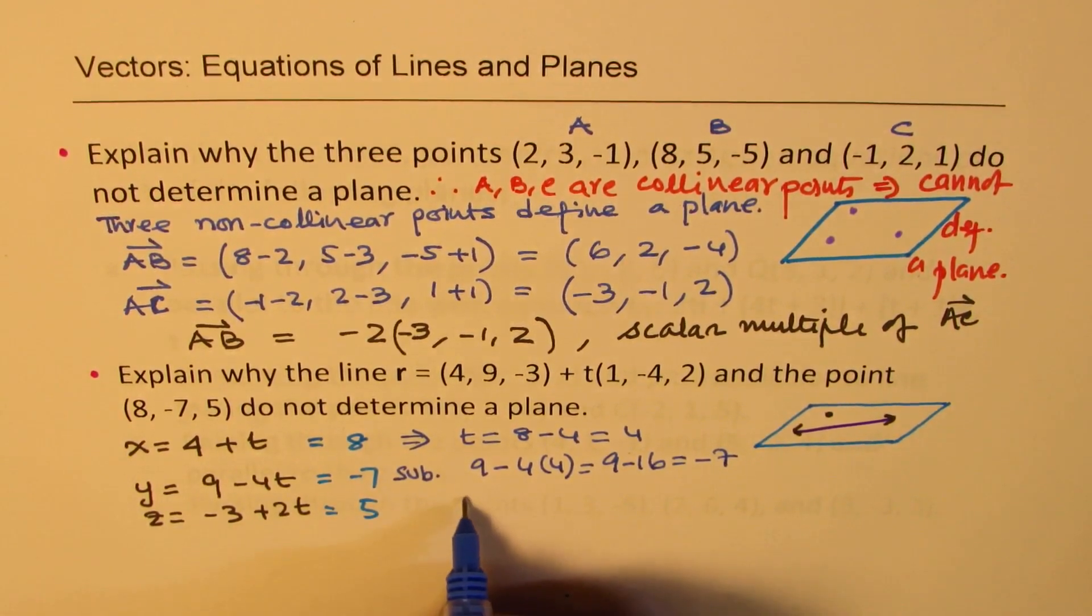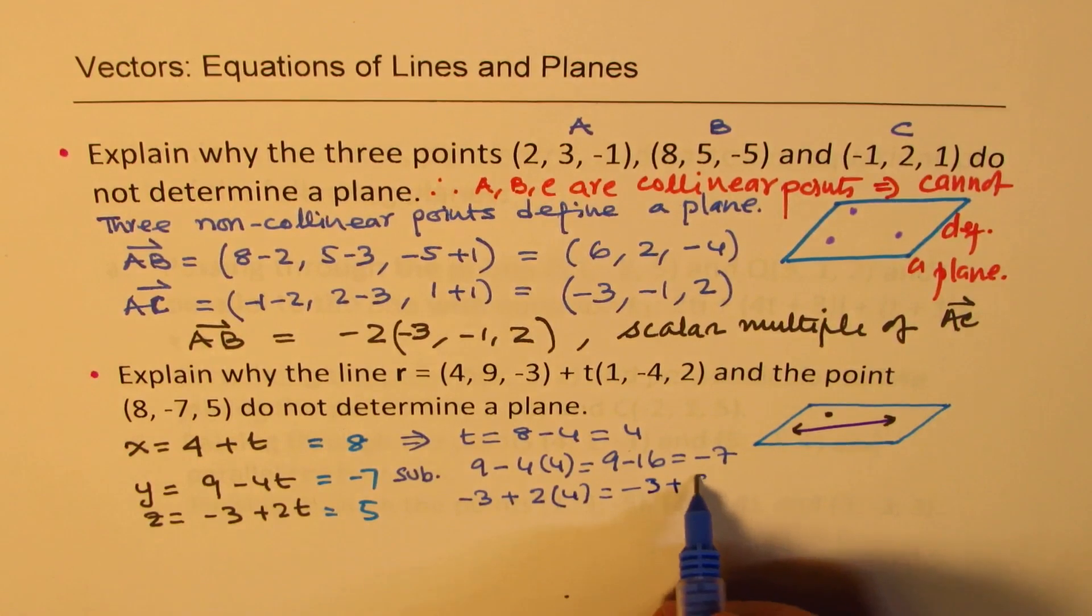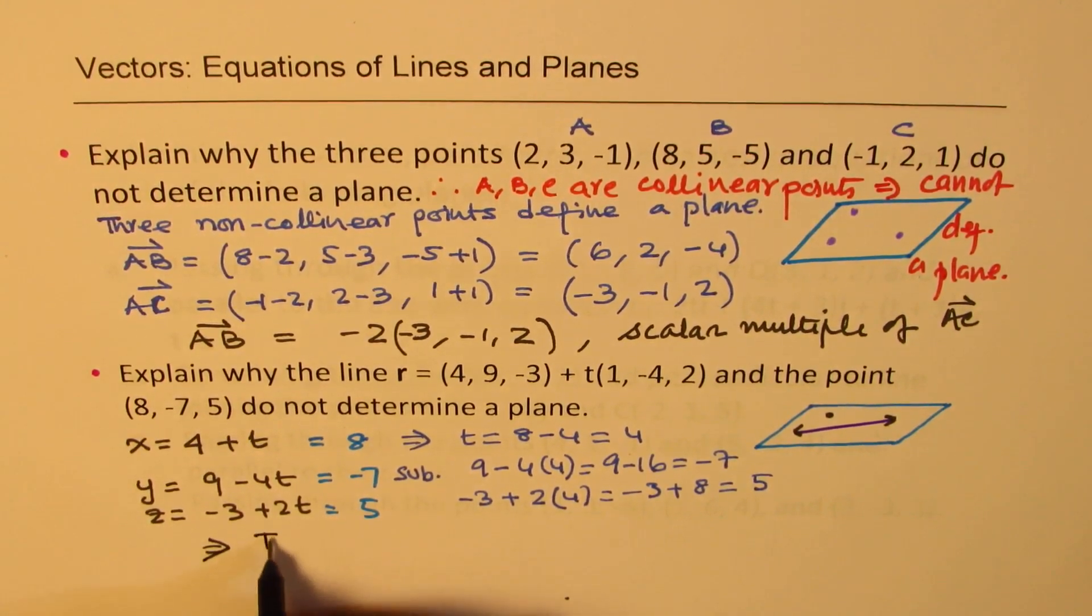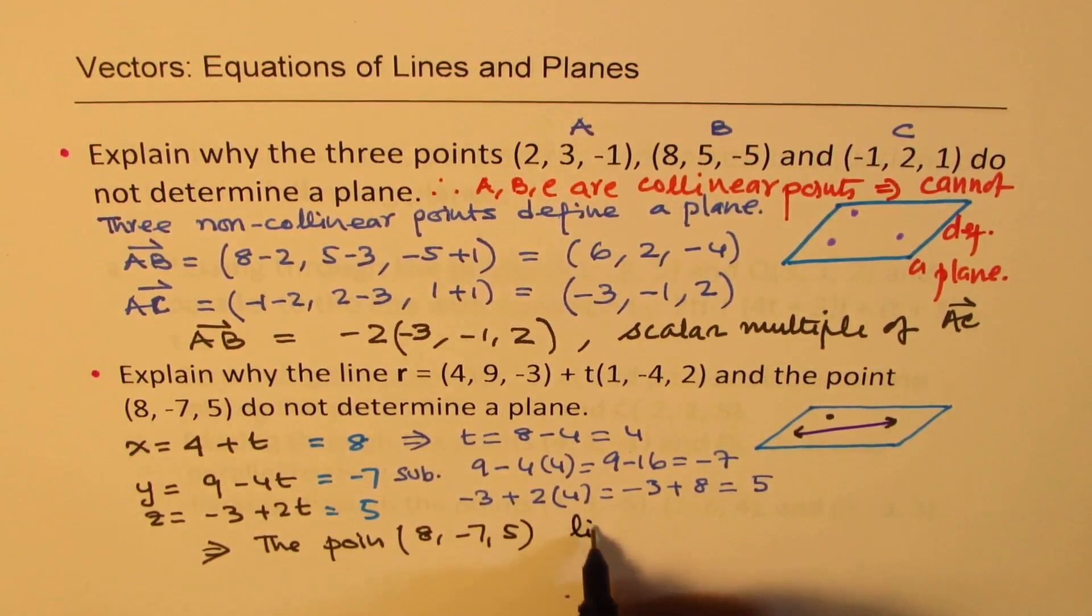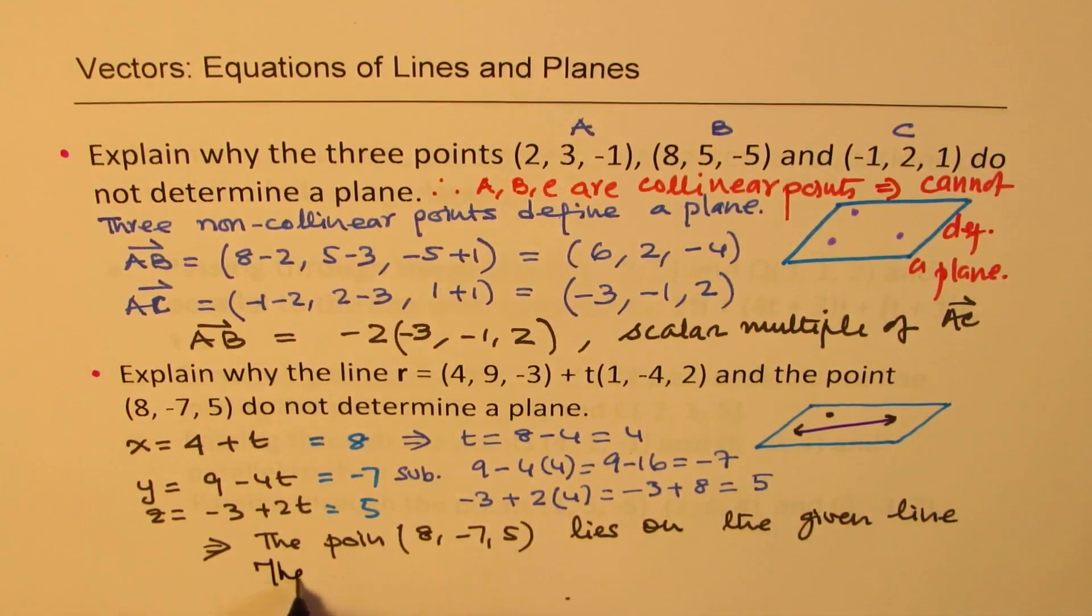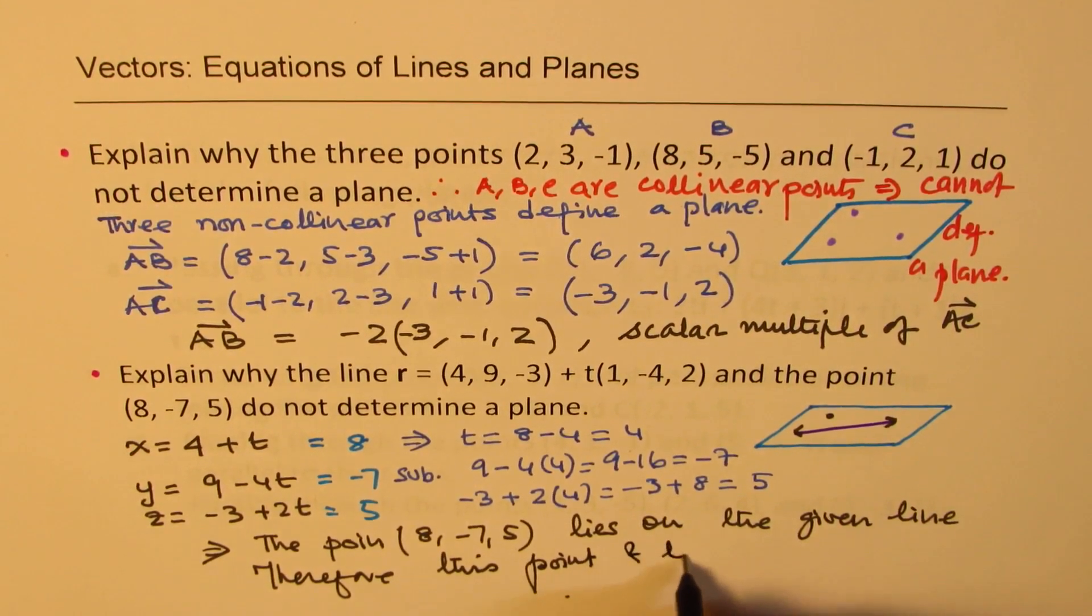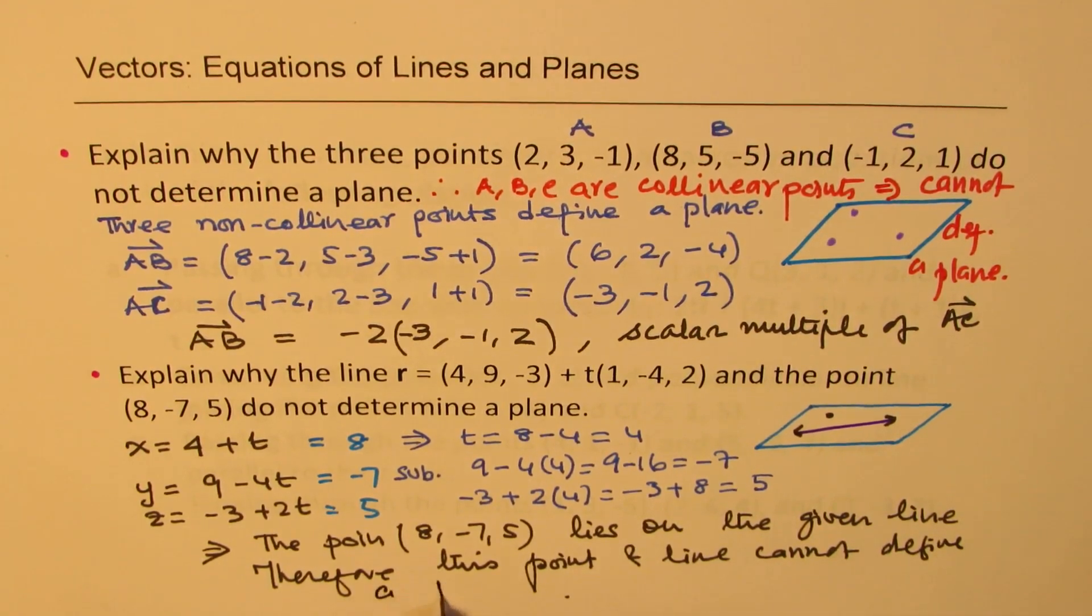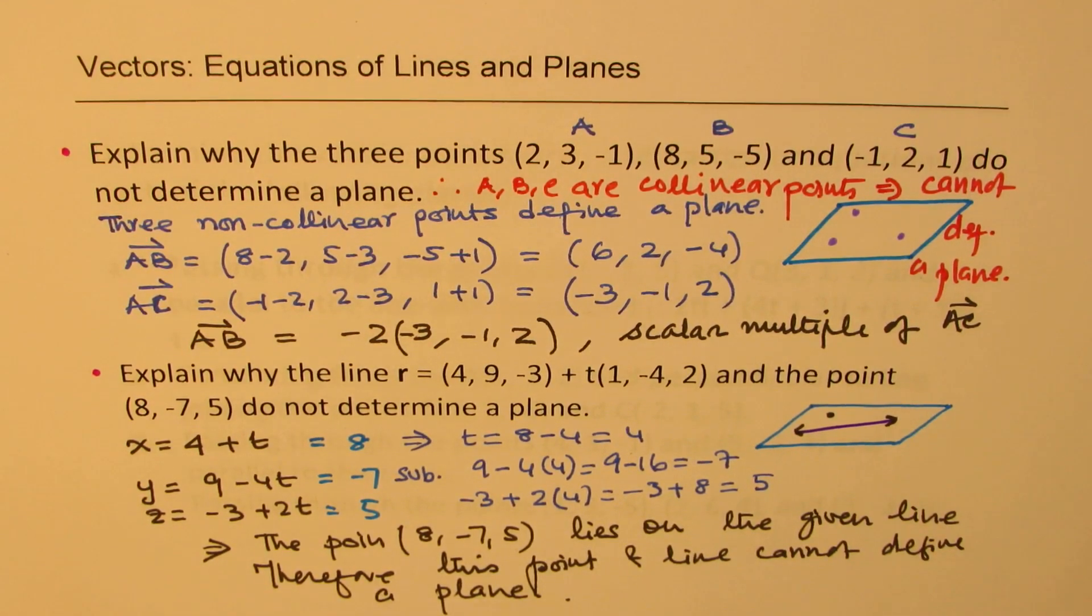And if I substitute here, I get what? -3 + 2 times 4, t is 4. And I get -3 + 8 which is indeed equal to 5. So that shows what? So this implies that the point (8, -7, 5) lies on the line, on the given line. Therefore, this point and line cannot define a plane.